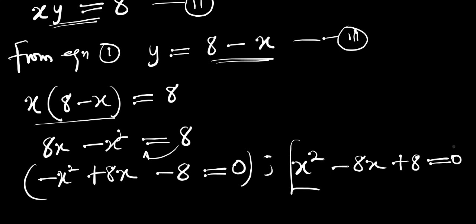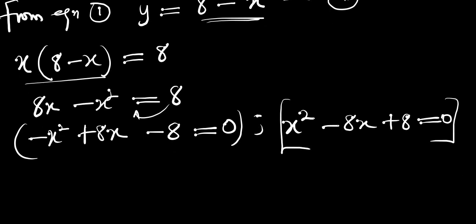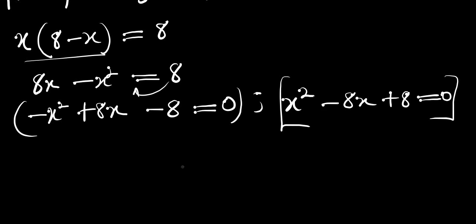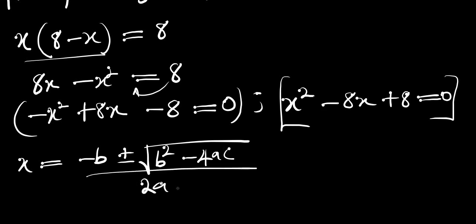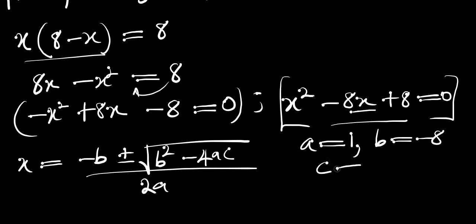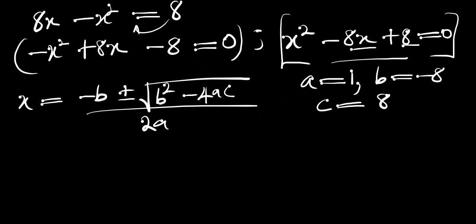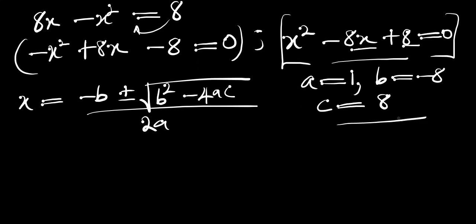So this is a quadratic equation, and we are going to solve it using the formula method. We have x equals negative b plus or minus the square root of b squared minus 4ac, divided by 2a. From this quadratic equation we have a equals 1, b equals negative 8, which is the coefficient of x, and c equals 8, the constant.